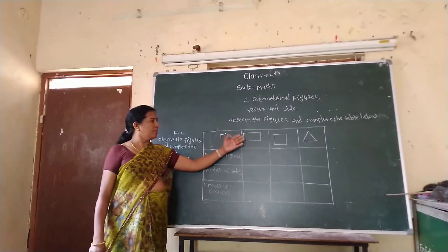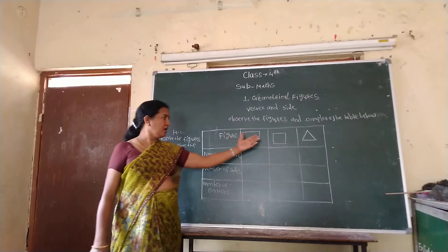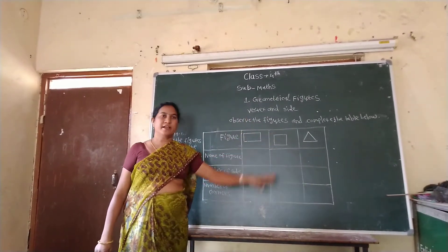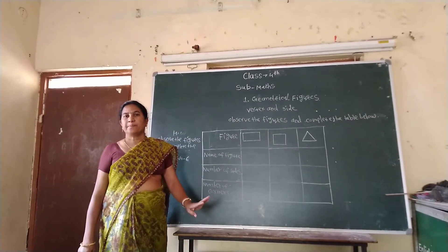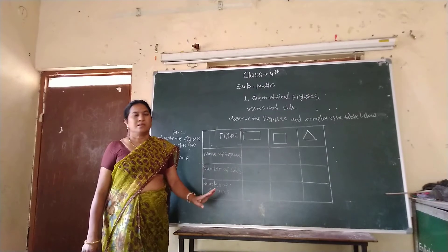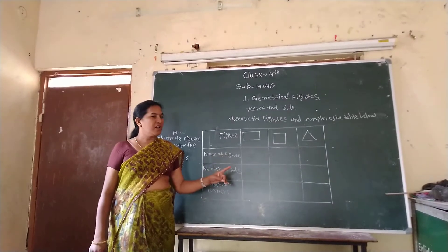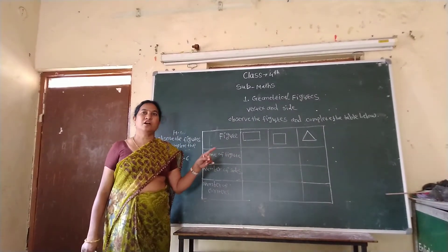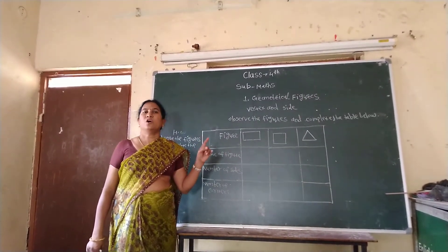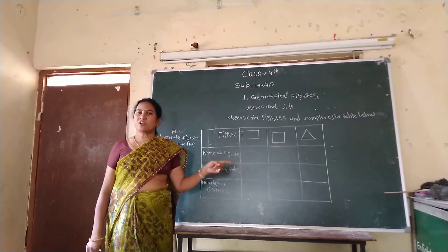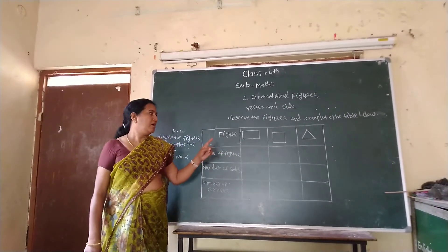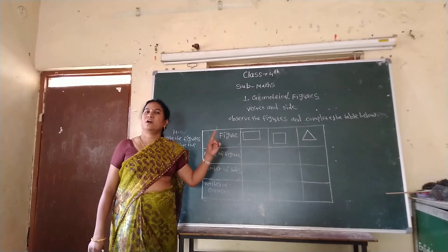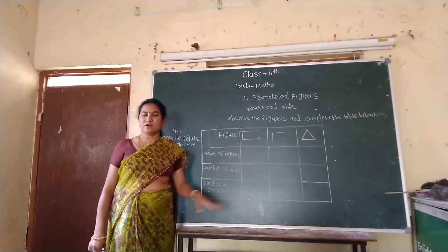Rectangle ko four sides aur four corners. Aur square ko four sides aur four corners. Aur triangle ko three corner aur three side hai.